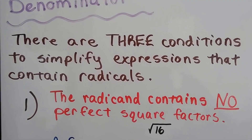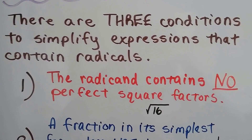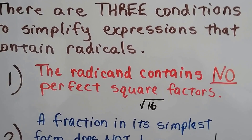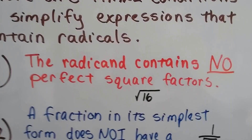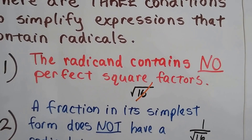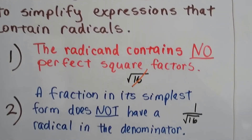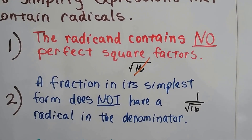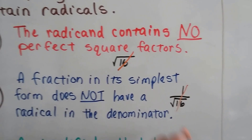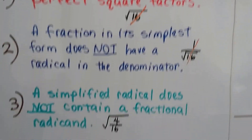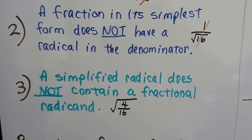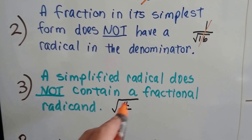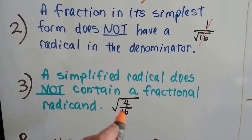There are three conditions to simplify expressions that contain radicals. First, the radicand contains no perfect square factors — so the square root of 16 is not simplified because 16 is a perfect square. Second, a fraction in its simplest form does not have a radical in the denominator. Third, a simplified radical does not contain a fractional radicand — even if it's 1/16th, it can't have a fraction inside the radical, otherwise it's not simplified.